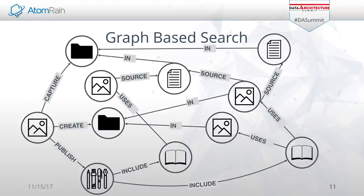Graph-based search is what Google built their entire enterprise on. Instead of just indexing text and documents, they said: what if we looked at how the documents are connected? With graph today and being able to use graph databases, we can have that same type of capability for search. You can take the text search, combine it with how the data is connected, and it enriches and provides a much more relevant search result.